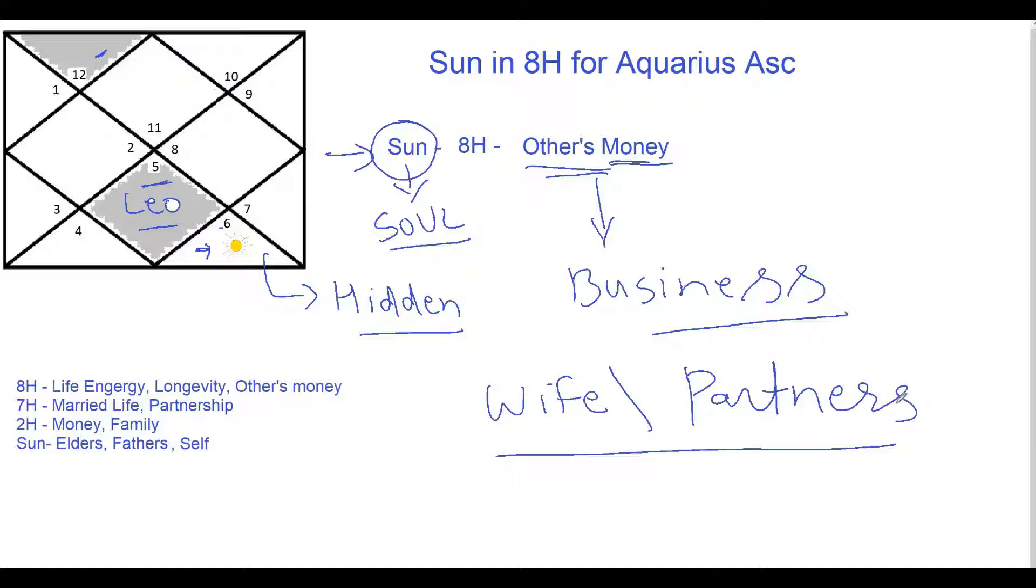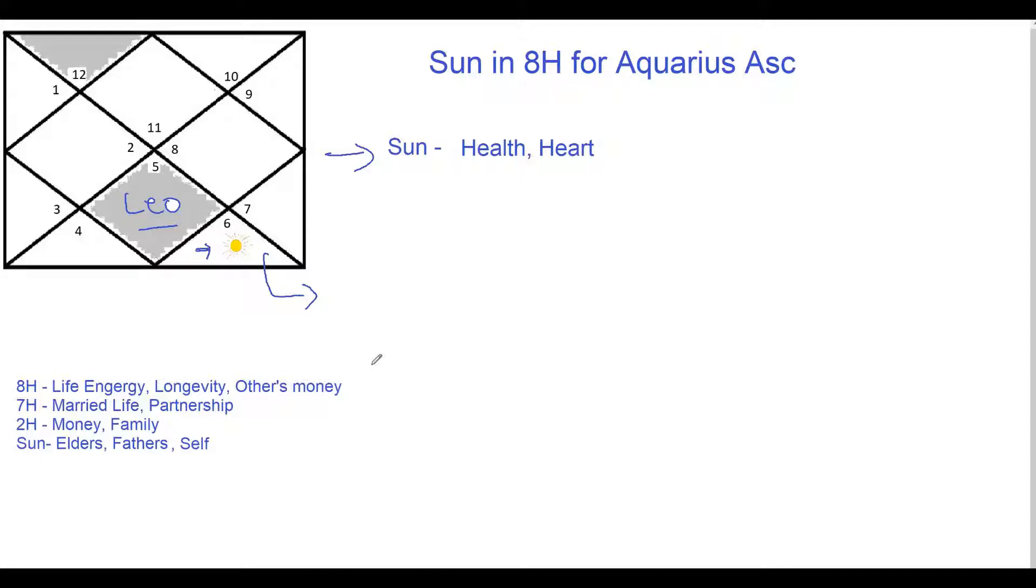Now Sun is also responsible for your general health and in particular it represents your heart. So Sun's placement in this eighth house, the lord of the first house can show some kind of problem with blood circulation in life. And it is always advisable for people with this placement to do some kind of cardio exercise regularly.